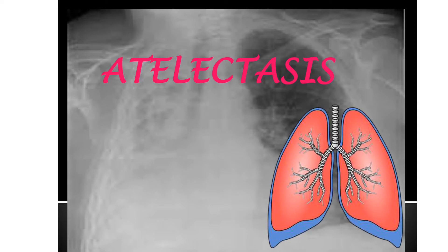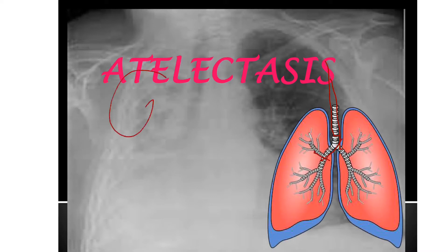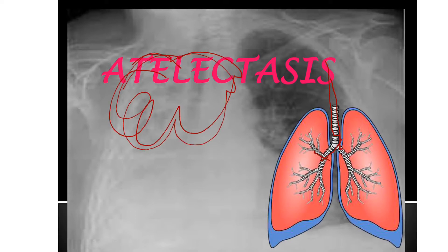The breathing pattern goes: inhale, exhale. Air flows from the environment going into the lungs based on the principle of higher concentration to lower concentration — atmospheric pressure from outside to your intrapulmonary pressure. With that, air moves in and out of the lungs, going through the trachea to the main bronchus, to bronchioles, and then to the alveoli where gas exchange occurs.